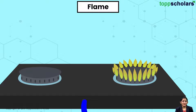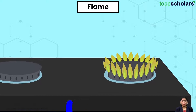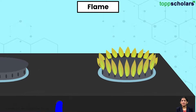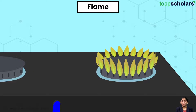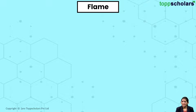Hello dear students, what's this? Why is the stove flame yellow in colour? Is there something wrong with the burner? I can observe yellow flame instead of blue flame. Can you help me? Let us understand the science behind this.